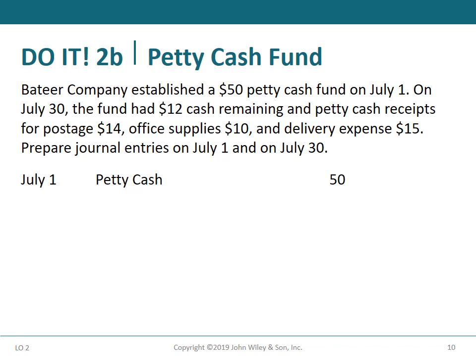Another example for petty cash: Peter Company established a $50 petty cash fund on July 1. On July 30, the fund had $12 cash remaining and petty cash receipts for postage $14, office supplies $10, and delivery expenses $15. Prepare journal entries for July 1 and July 30.